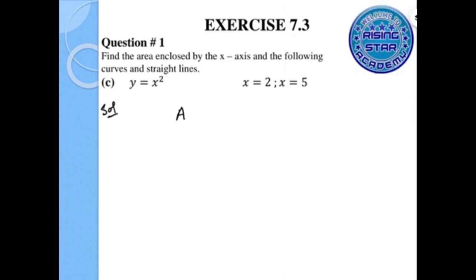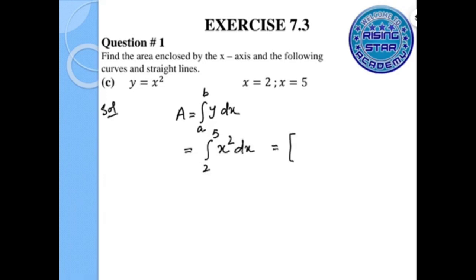Now we will solve the next part. The area A equals the integral from a to b of y dx. The lower limit is 2, the upper limit is 5, and the value of y is x squared. Integrating, we get x cubed over 3, evaluated from 2 to 5.